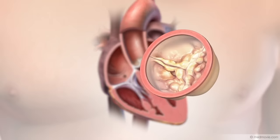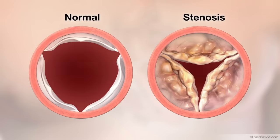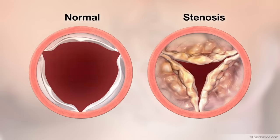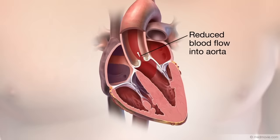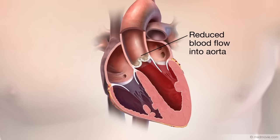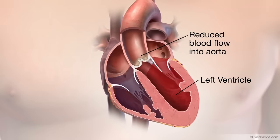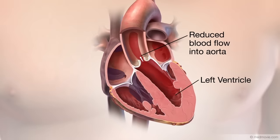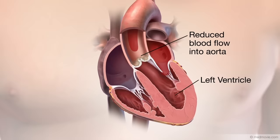The view from above shows the valve opening is smaller than normal. The diseased leaflets cannot move correctly, resulting in poor blood flow through the valve, which causes pressure to build in the left ventricle. If not treated, this condition can damage or weaken the heart muscle over time.